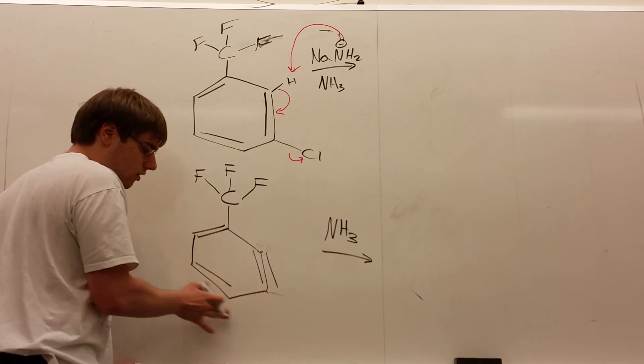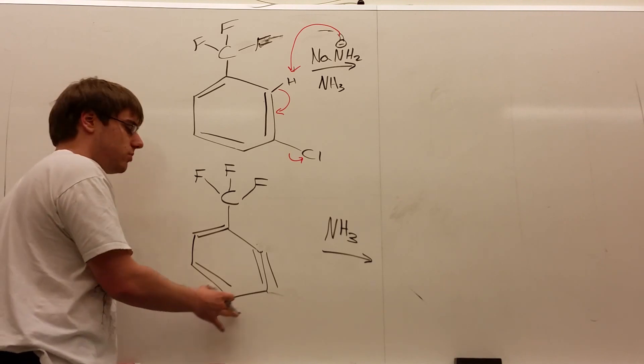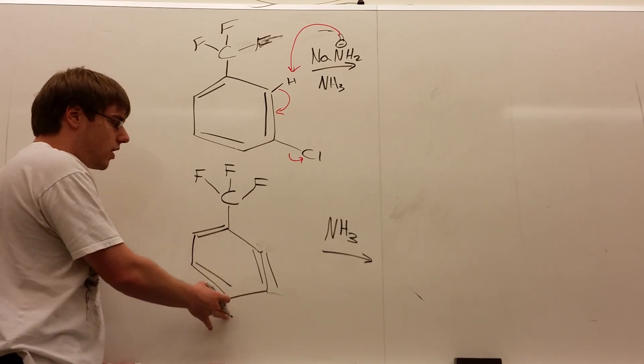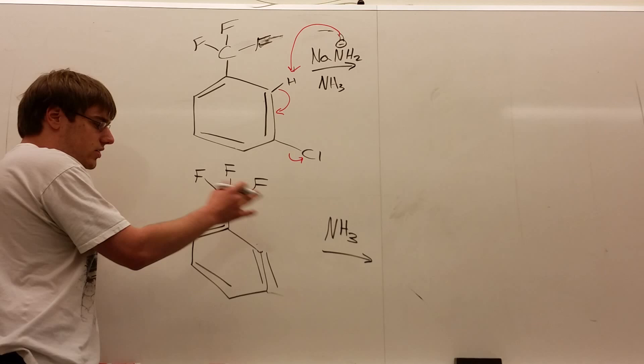And if the triple bond was here or here, it would always prefer attacking the para position, because the positive resonates there. But in this case, since there's no resonance,